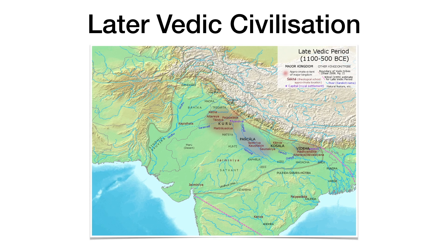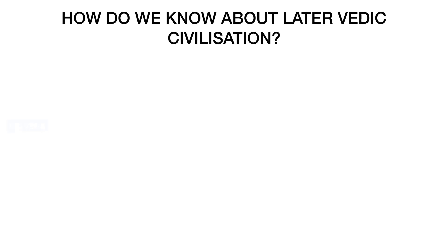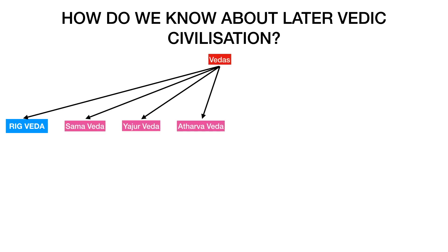Now let us discuss the later Vedic civilization. The map on screen shows the later Vedic civilization. By this time, Indo-Aryans moved to the northern parts of India. However, the Gangetic plains remained out of bounds to the Vedic tribes because of thick forest cover. By the end of the Vedic period, several tribal kingdoms were formed. The Kuru kingdom was the first Vedic state formed by the then tribes. The sources for later Vedic civilization are the remaining three Vedas along with other scriptures.